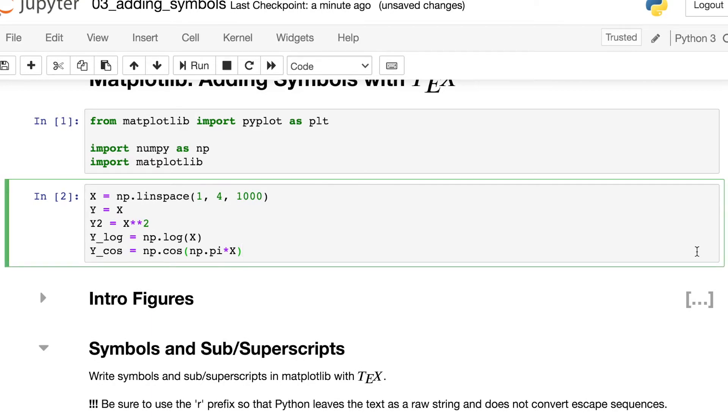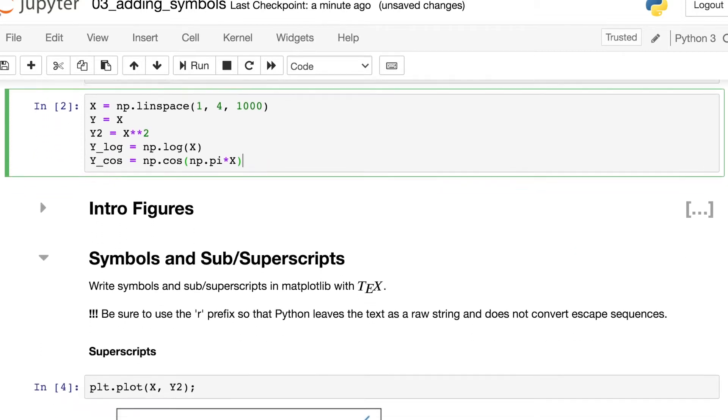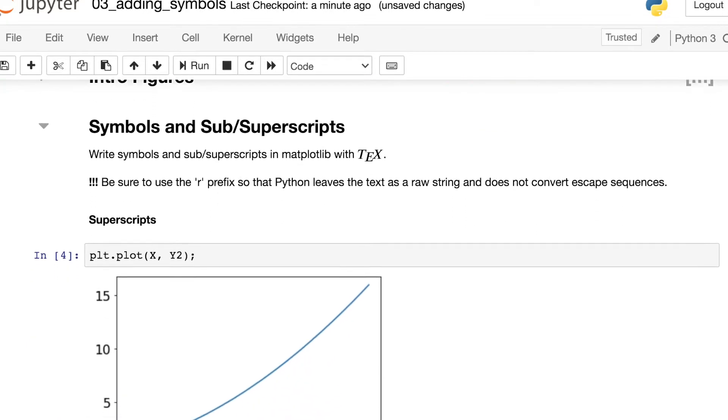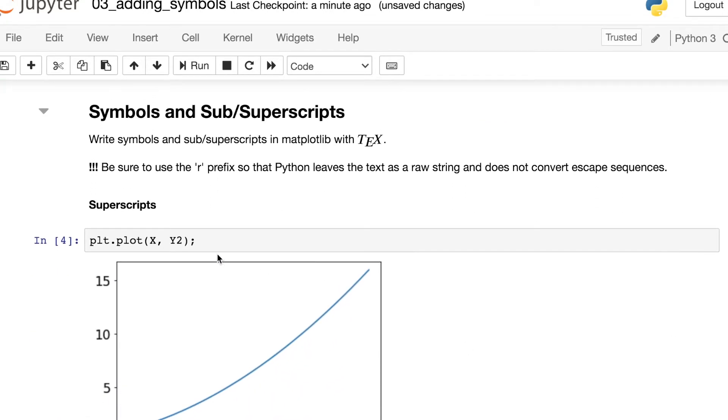So X ranges from 1 to 4 and then the various Y values just are some function of X. So now we're ready to try out TeX with Matplotlib and let's go ahead and try to write a superscript first.